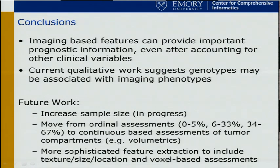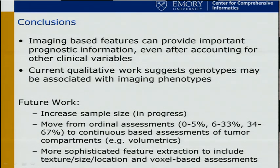To conclude: imaging-based features can provide important prognostic information, even after accounting for other clinical variables. As we start doing genetically defined subclassifications and looking at predictors of survival, keeping in mind clinical factors like tumor location and how that affects surgery becomes important. Current qualitative work suggests genotypes may be associated with imaging phenotypes. We're increasing the sample size from 70 to 120, and also moving from ordinal assessments to continuous-based volumetric assessment, which we think will be a more sensitive probe. This training dataset allows us to validate our algorithms.